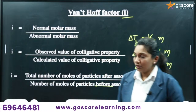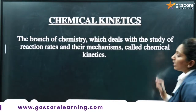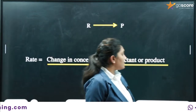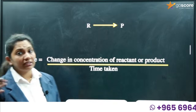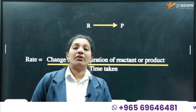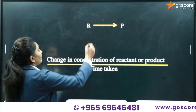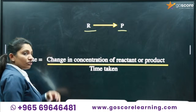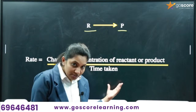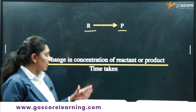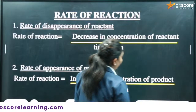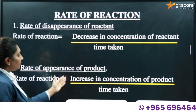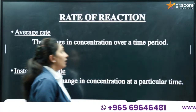Now we can start with chemical kinetics. Chemical kinetics is the branch of chemistry which deals with the speed or rate of reactions. We can express the rate of reaction either as the decrease in concentration of reactant or the increase in concentration of product with time. If you have a reaction R → P, the rate is expressed in terms of change in concentration of reactant or product over time taken.